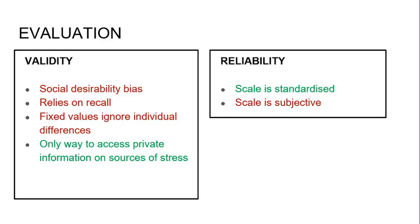The scale is also subjective, though. On the other hand, it differs from person to person — this is similar to the point about individual differences and validity, but in a slightly different way. When looking at items on the scale, one person might see 'illness and injury' and think 'I had the flu last week, so I'll tick that,' while another person might think 'I broke my arm, so I'll tick that.' It's subjective — it differs in how people interpret it. So that can influence how reliable it is, because you're not necessarily going to get the same responses each time.